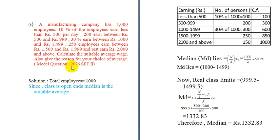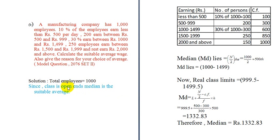This is a problem from 2006. The choice of suitable average: since the class is open-ended — meaning 'less than' and 'above' type intervals are present — this is an open-end distribution. Since the class is open-ended, the median is the suitable average.